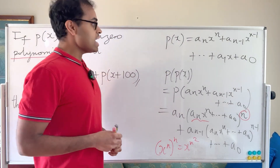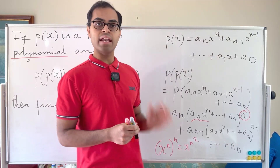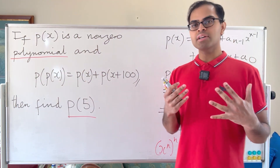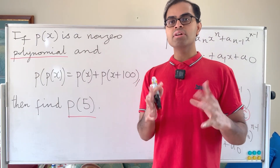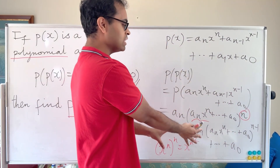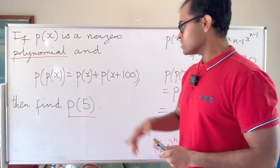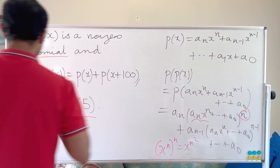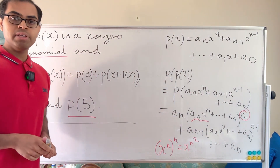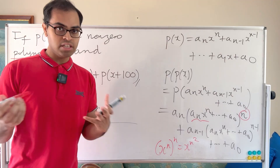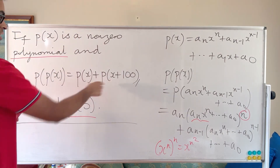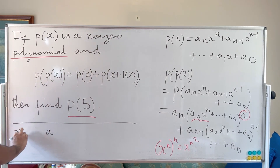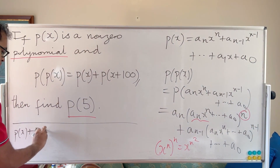That's very important: p(p(x)) has degree n², whereas p(x) has degree n. On the other hand, if we expand the right-hand side, p(x) + p(x+100), we get a_n x^n + ... + a_1 x + a_0 plus a_n(x+100)^n + a_{n-1}(x+100)^{n-1} + ... + a_0. Because this is just a translation of p, the degree isn't going to be bigger than n.